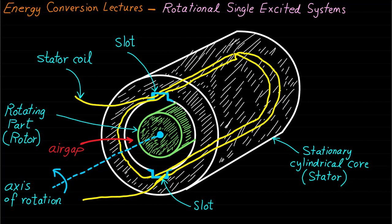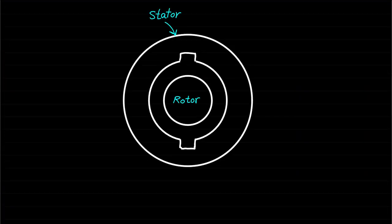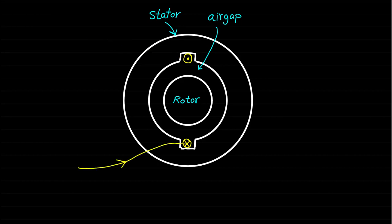Let's assume that this system or machine is a linear magnetic system. That means the stator coil inductance will depend on the geometry only. Now let's simplify this drawing by taking a cross-sectional section of the machine as shown. Assume that the excitation current of the stator coil is as shown, so the current is going out of the upper stator slot and the current is going into the lower stator slot.